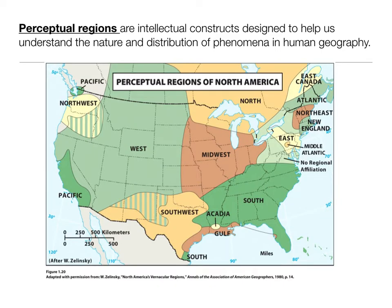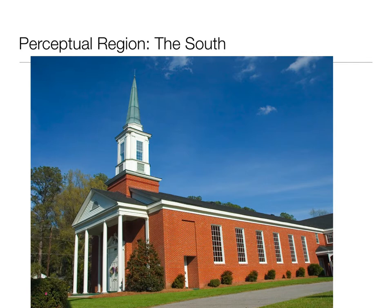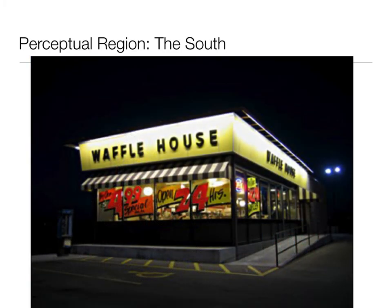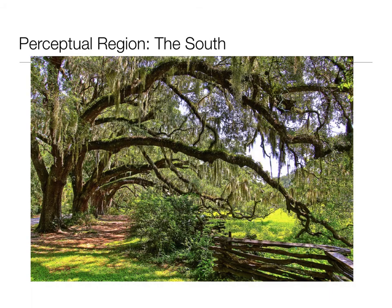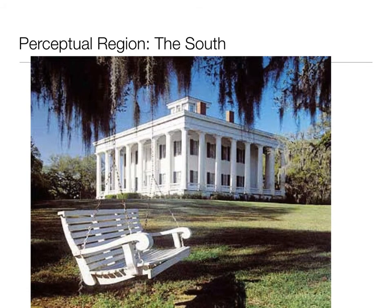Next up we have perceptual regions — intellectual constructs designed to help us understand the nature and distribution of phenomena in human geography. I like to think of these as regions of the mind. Here we have a map of perceptual regions of North America. The perceptual region considered the South is marked by its cultural landscape: a Baptist church showing the dominant religion, a Waffle House showing types of foods eaten in the region, and the physical landscape with old trees draped in Spanish moss and remnants of plantation architecture.